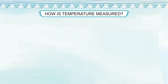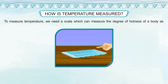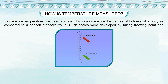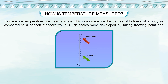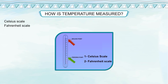How is temperature measured? The hotness and coldness of a body can be sensed by touch; however, touching cannot give us a value of temperature. To measure temperature, we need a scale which can measure the degree of hotness of a body compared to a chosen standard value. Such scales were developed by taking the freezing point and boiling point of water as standard values. Scientists have developed three scales of temperature: 1) Celsius scale, 2) Fahrenheit scale, 3) Kelvin scale.